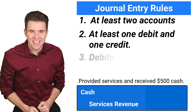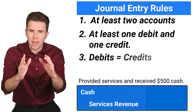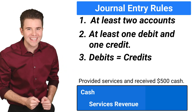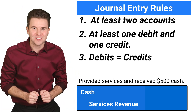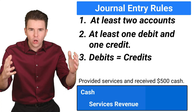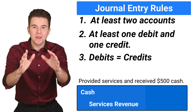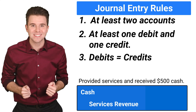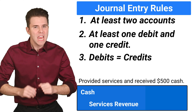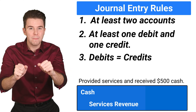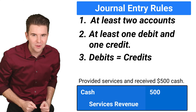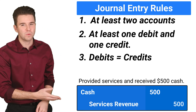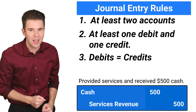Rule number three: total debits must always equal total credits in every journal entry, always. This helps make sure that your accounting equation stays balanced. In our example, the debit amount to cash is $500 and the credit amount to services revenue is $500.